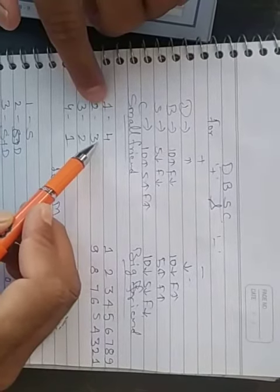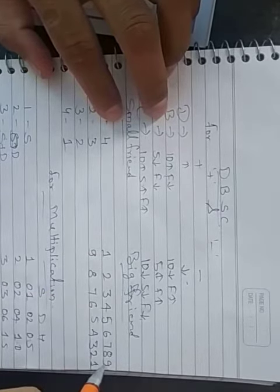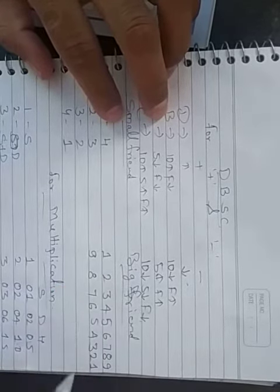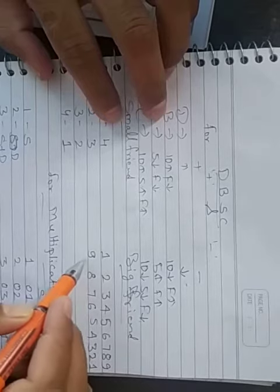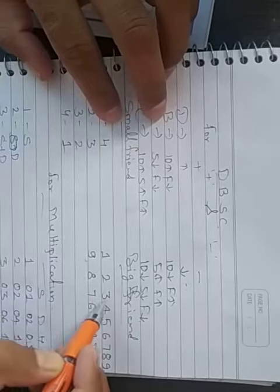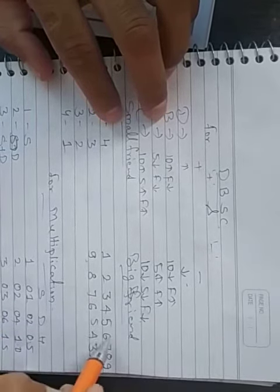And big friends. Big friend, we take all the numbers from 1 to 9 digits. And the friends are reverse of that numbers. Example, 1 friend is 9, 2 friend, 8, 3, 7, 4, 6, 5, 5, 6, 4, 7, 3, 8, 2, 9, 1.